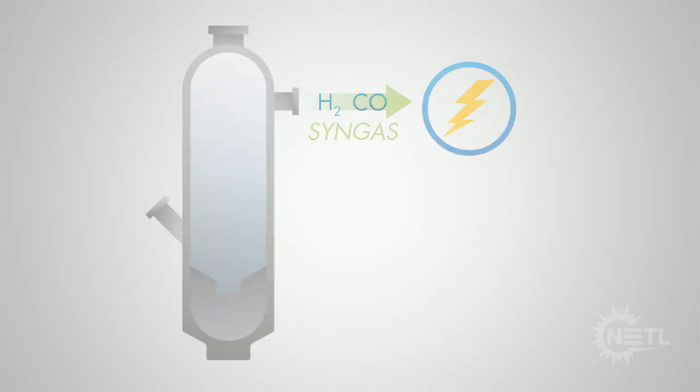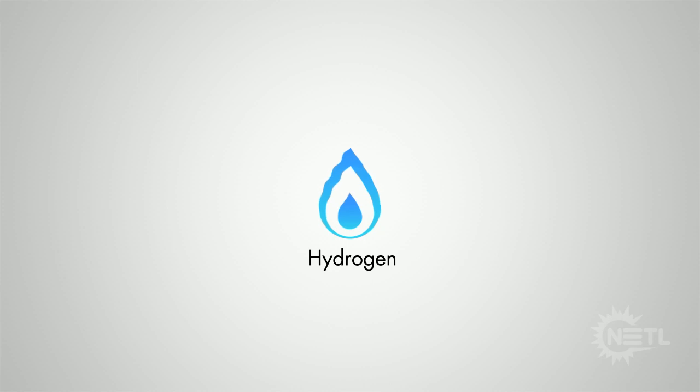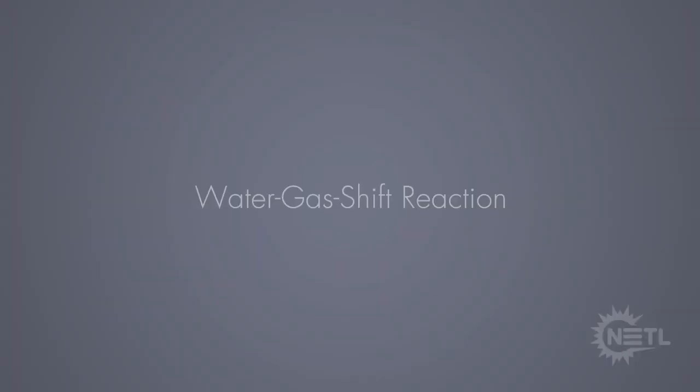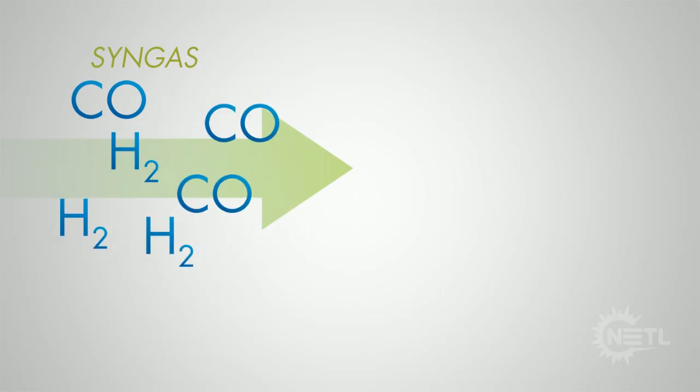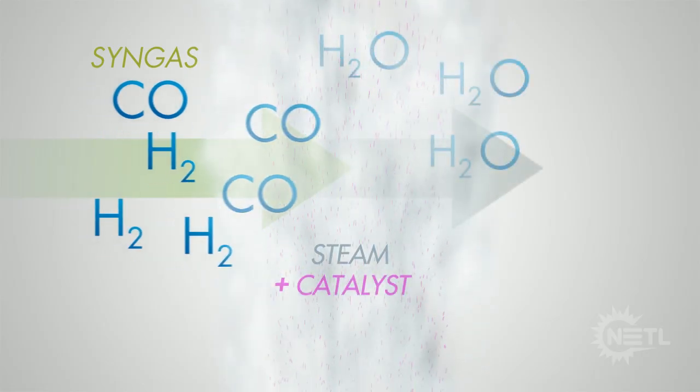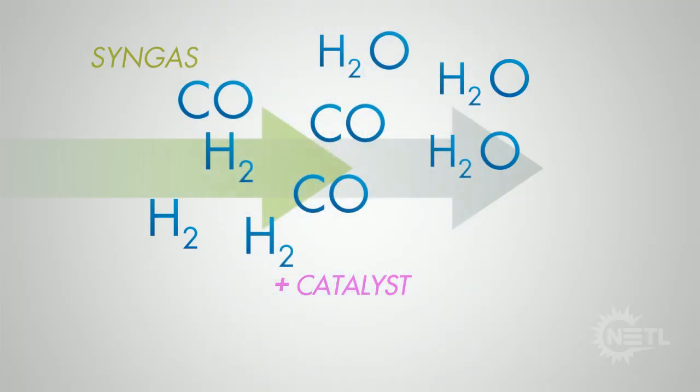To make clean energy from coal, we need hydrogen. To make more hydrogen, the water-gas shift reaction can be used to exchange each carbon monoxide molecule for a hydrogen molecule. When syngas is combined with steam in a catalyst, the water molecule gives off its oxygen atom to the carbon monoxide, turning carbon monoxide into carbon dioxide.